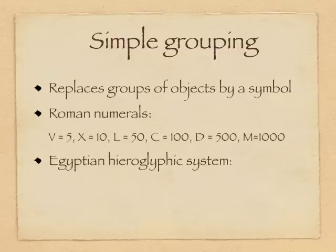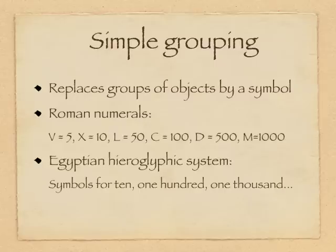The Egyptians had a hieroglyphic system that was simple grouping. There would be a symbol for ten, a symbol for a hundred, and a symbol for a thousand. And many other cultures had a simple grouping system. This is the next natural step after simple counting.